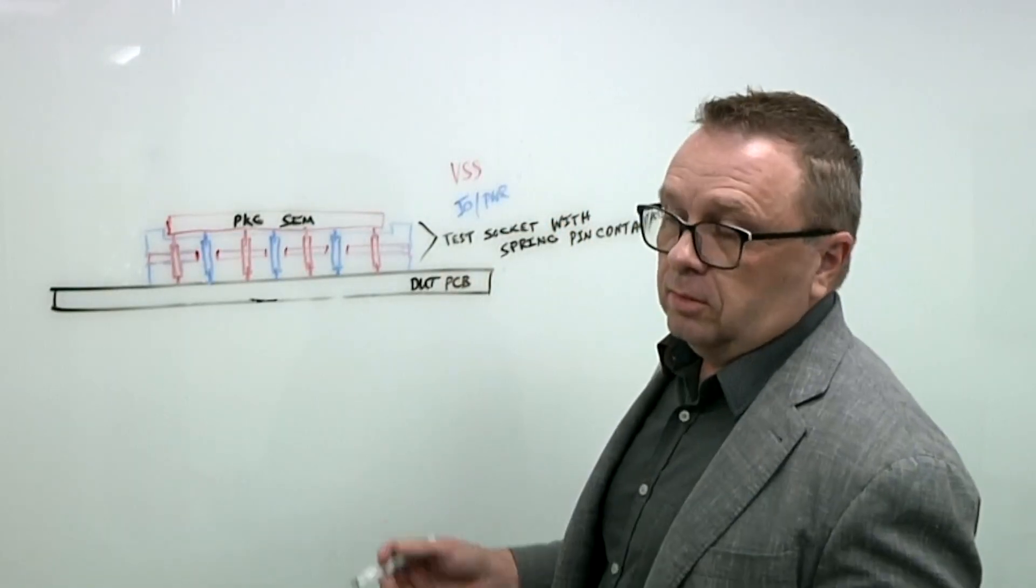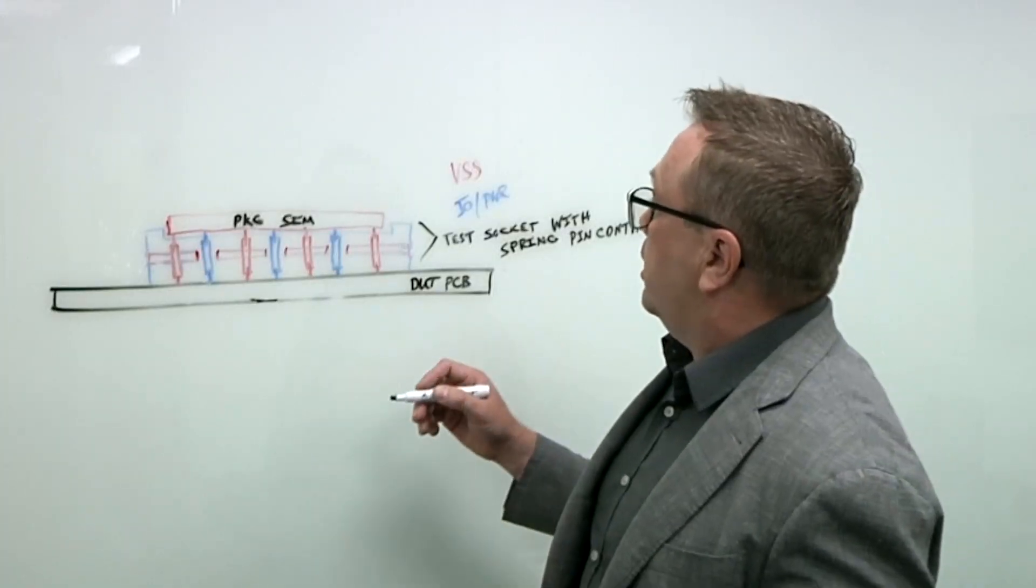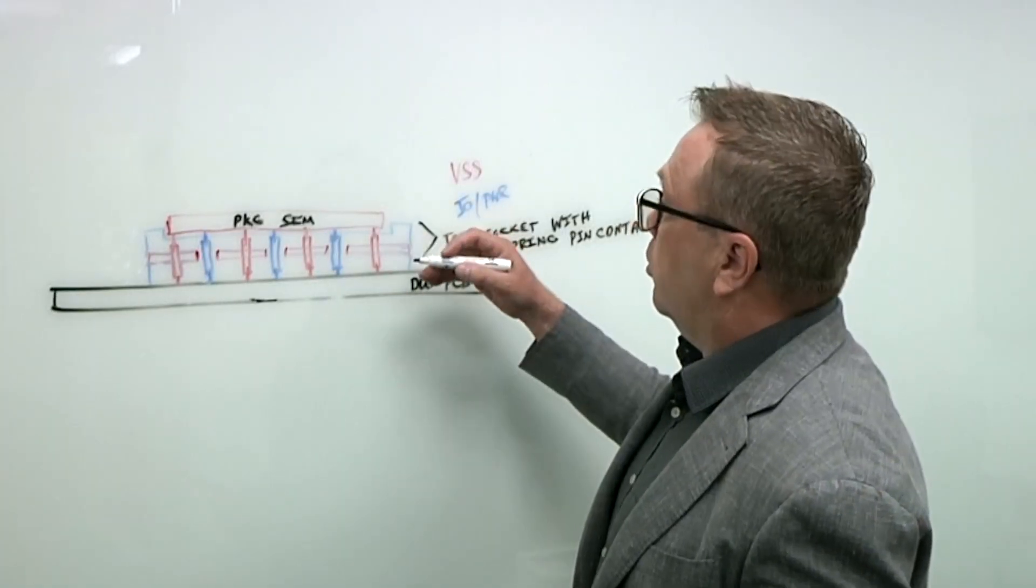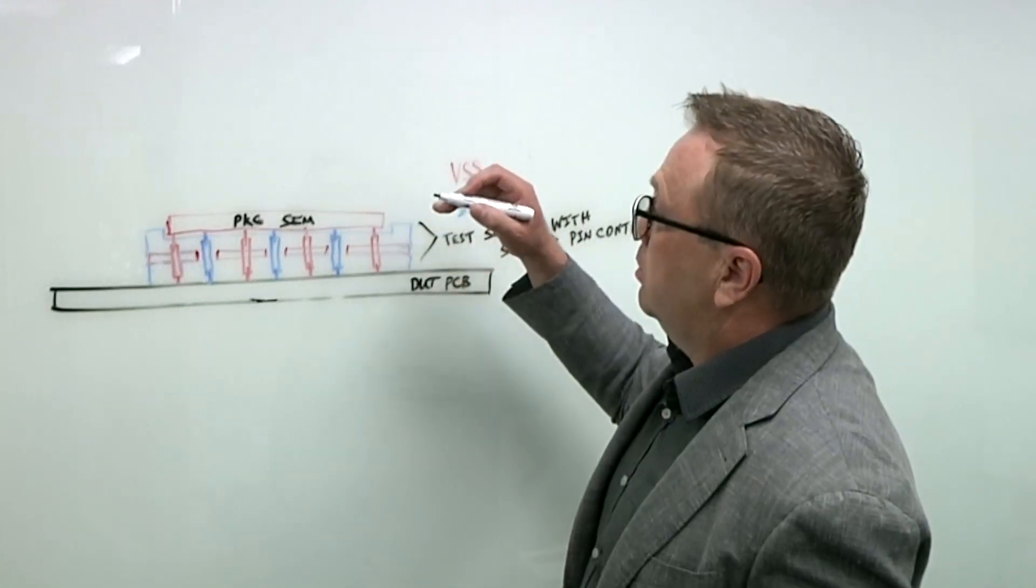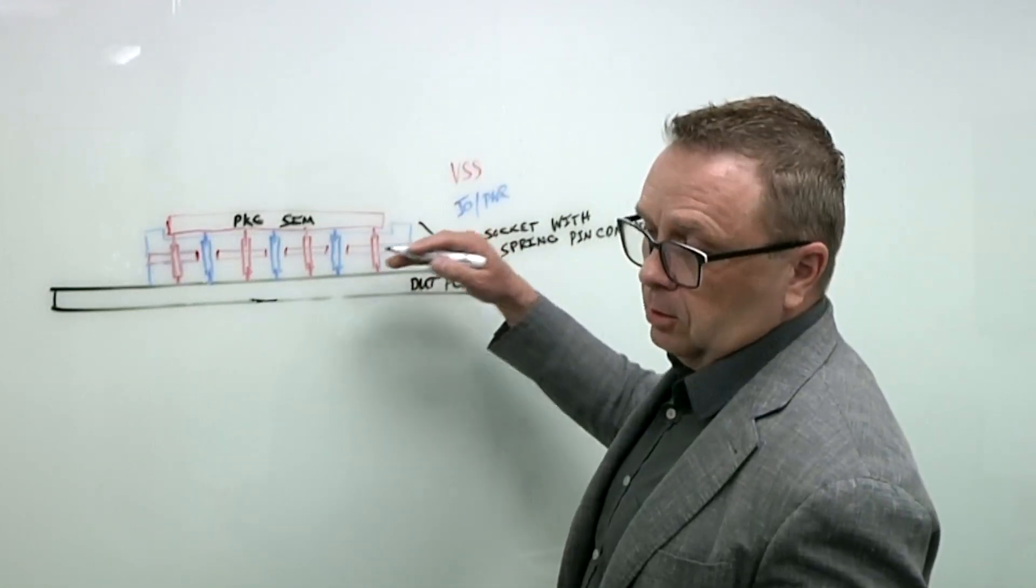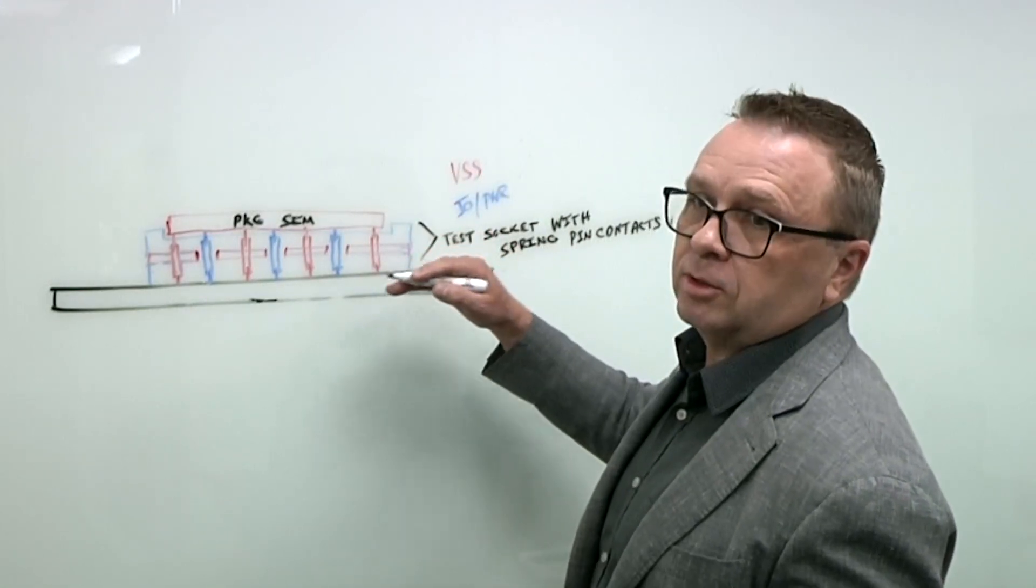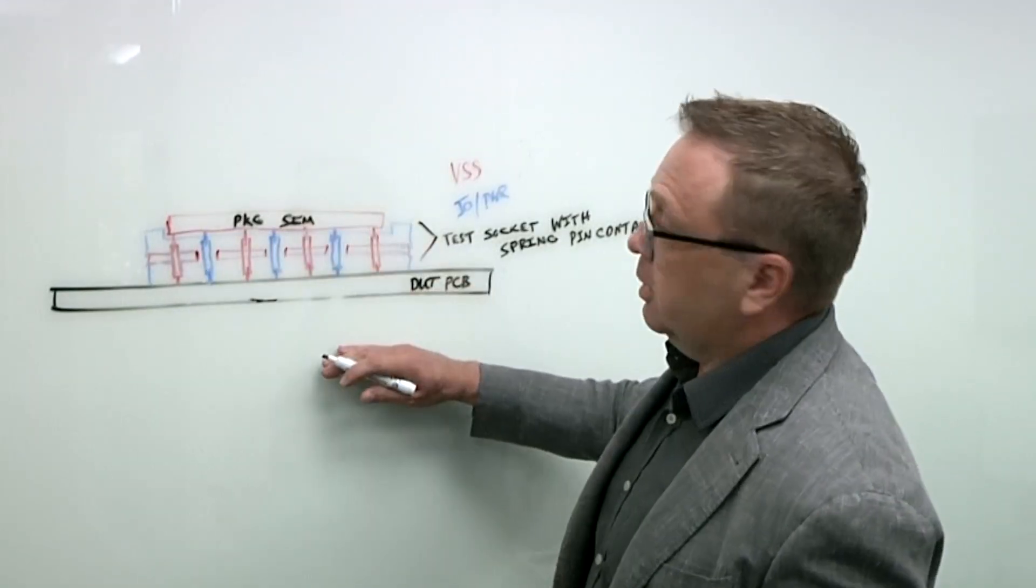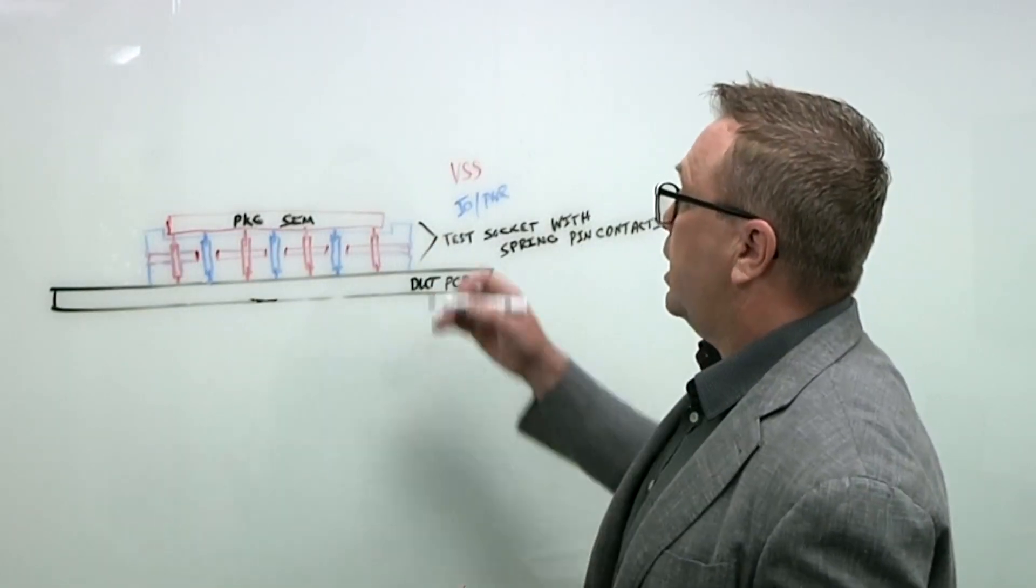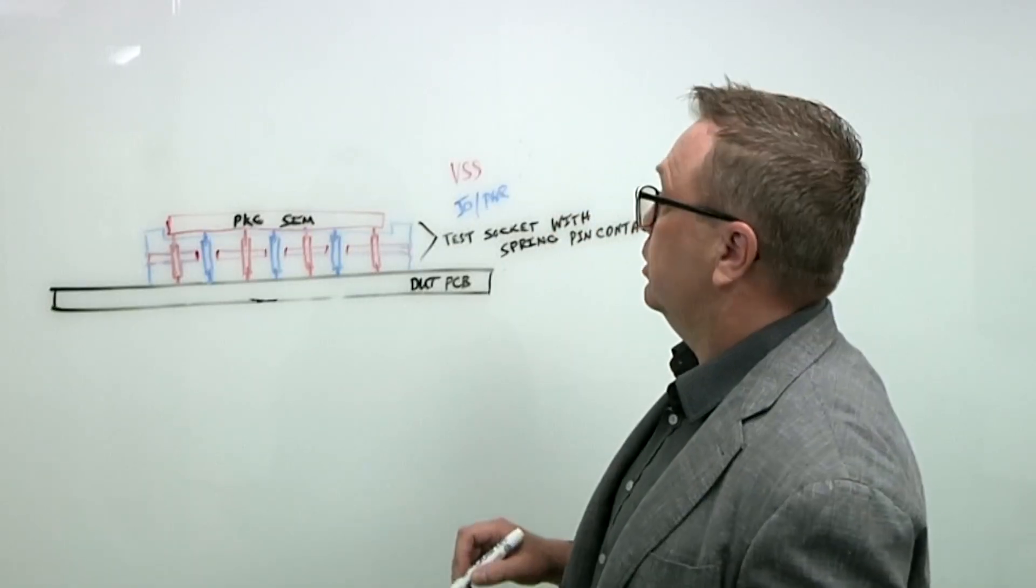With the new advanced AI processors, the performance requirement at system level test requires these packages to be as close to soldered down electrically as possible. Of course, that's not possible. So we have to blind mate electrically interconnect these packages to the tester temporarily to finish the test.